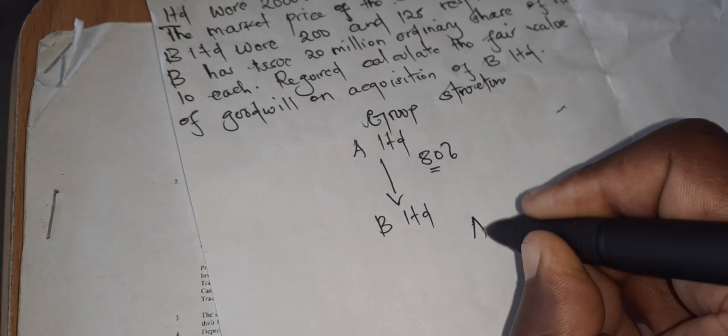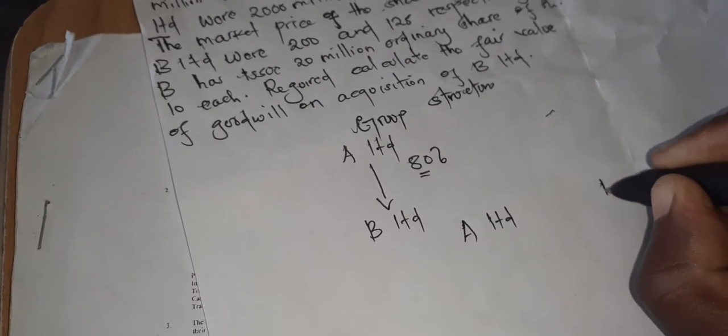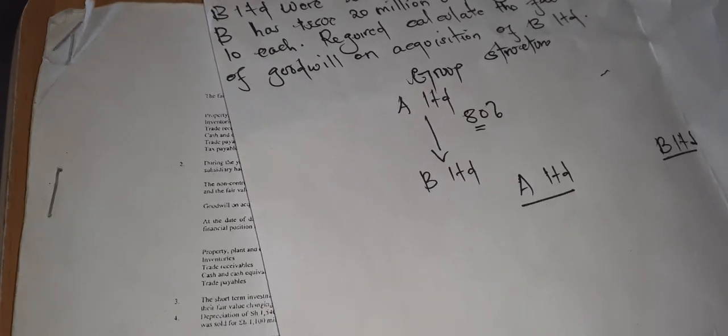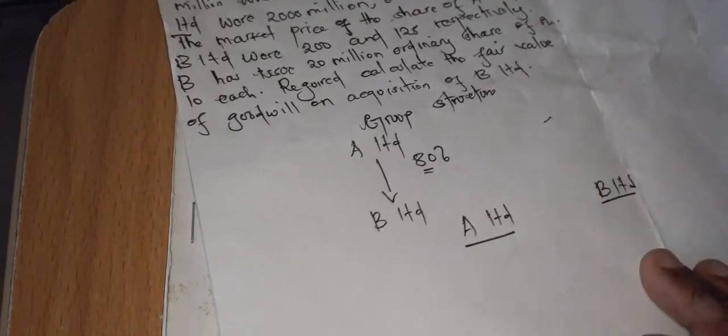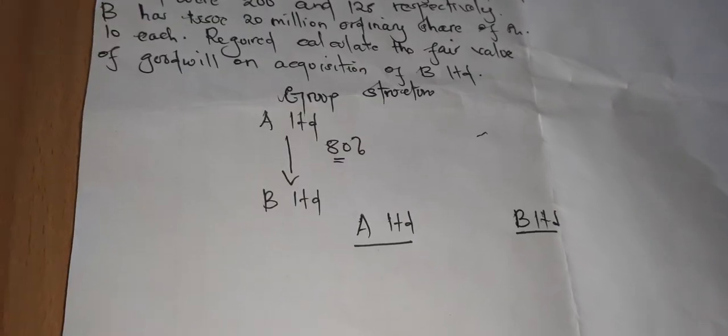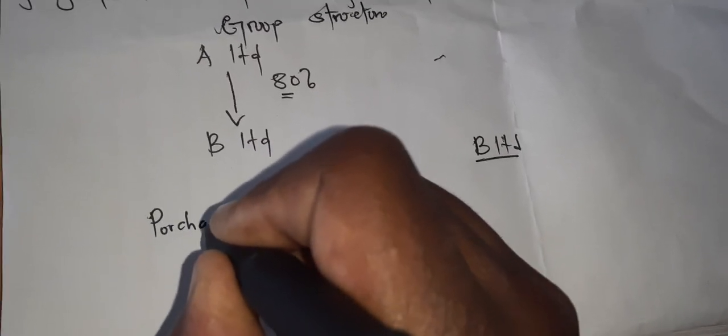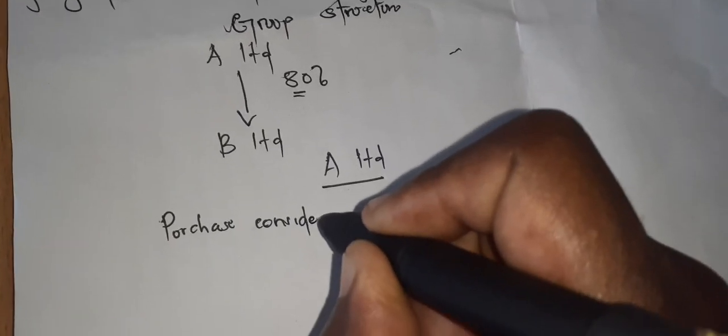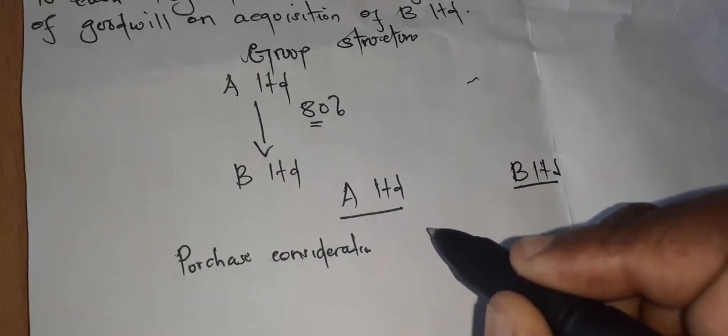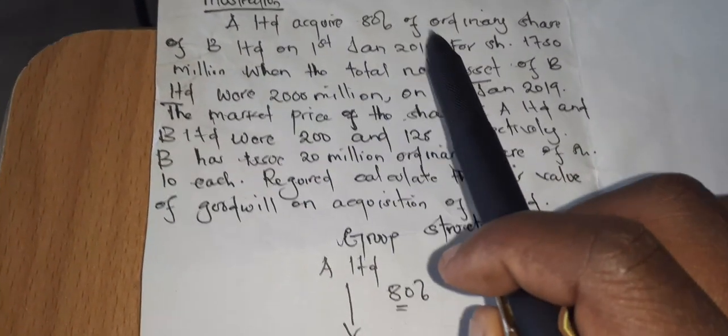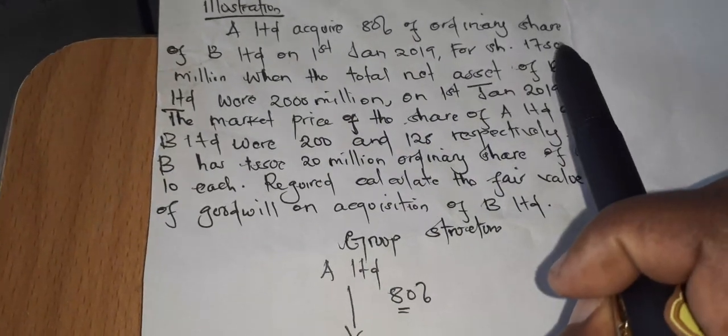So now we have to determine the goodwill. So we have our holding parent company being A Limited and subsidiary being B Limited. So first we have to take the purchase consideration because goodwill is the difference between the purchase considerations and the net asset share value.